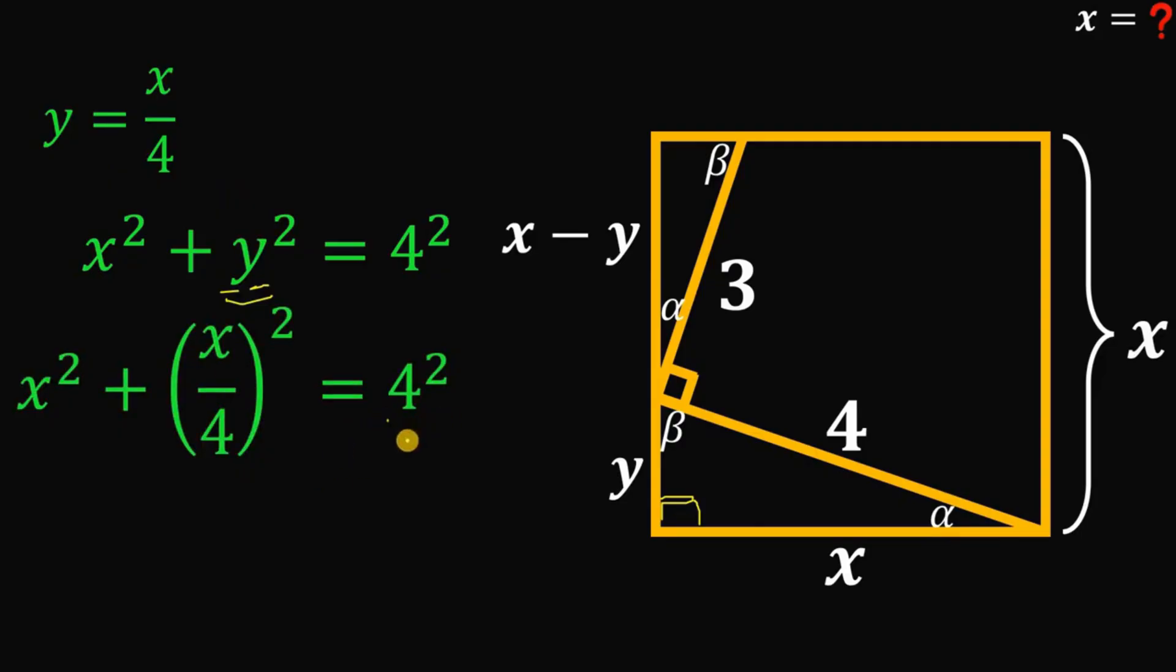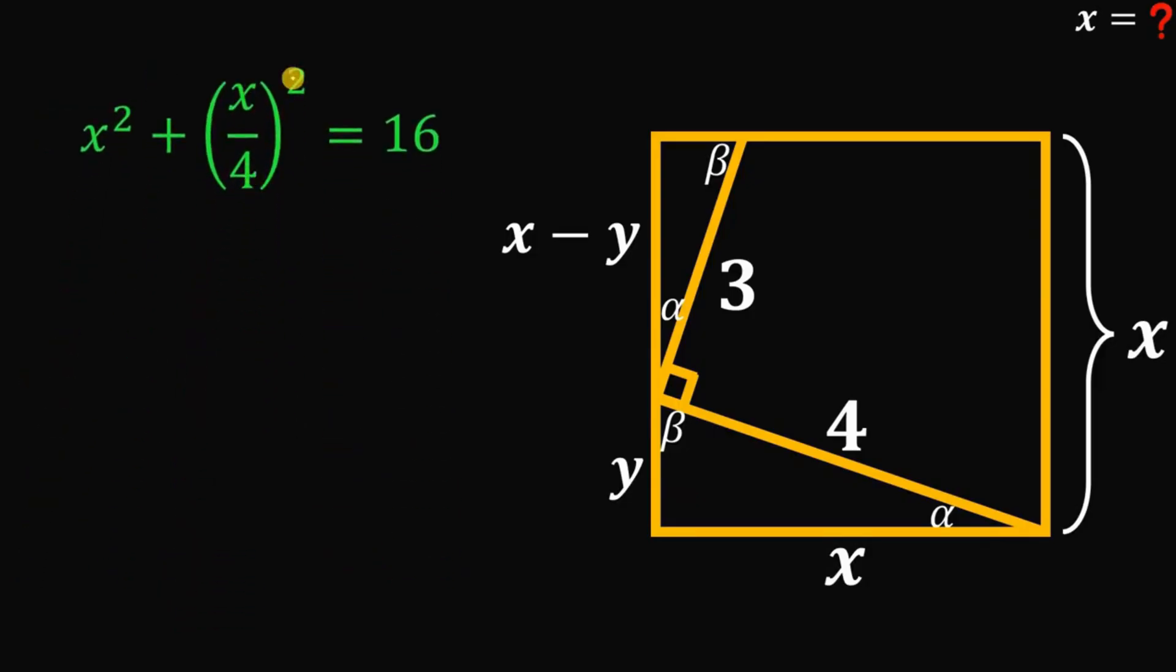Now simplifying this, 4 squared is just 16. And let's focus on this result. x over 4 to the power of two is just x squared over 16.